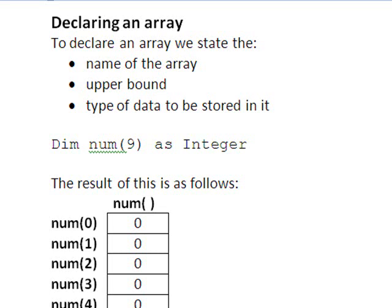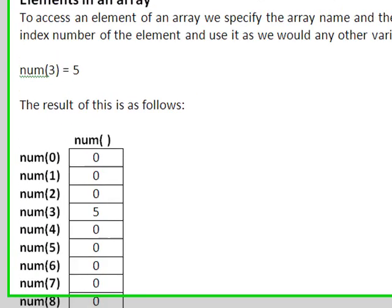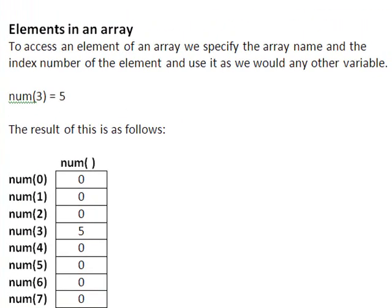And the result of this is to set aside 10 memory locations called num(0), num(1) up to num(9), each containing 0 which is the default value when we declare an integer. To access an element of an array, we simply specify the name of the array and the index of the element, and we use this as we would any other variable.